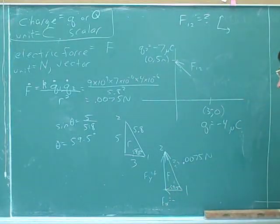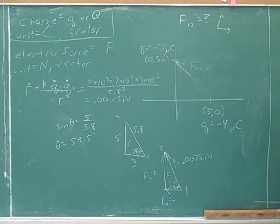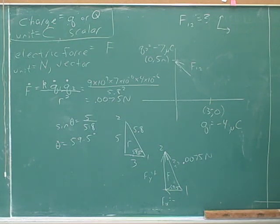How would we figure out these magnitudes? Just more trig. For f sub y, we do sine of 59.5.